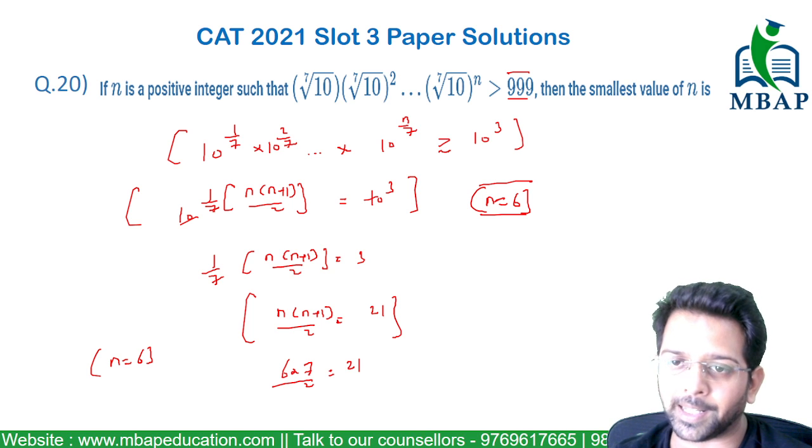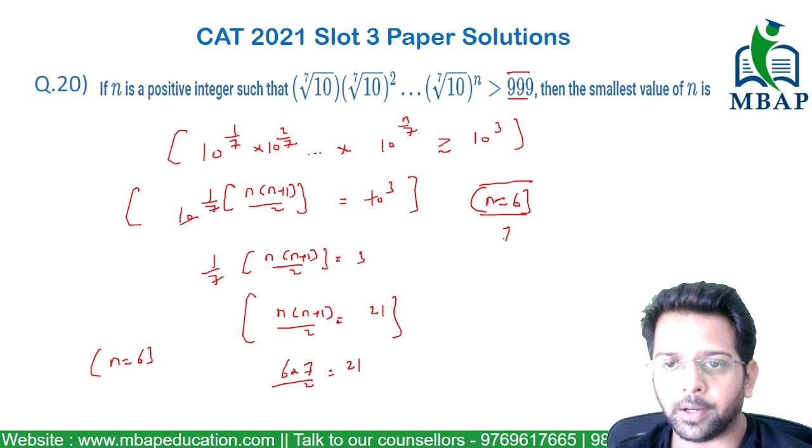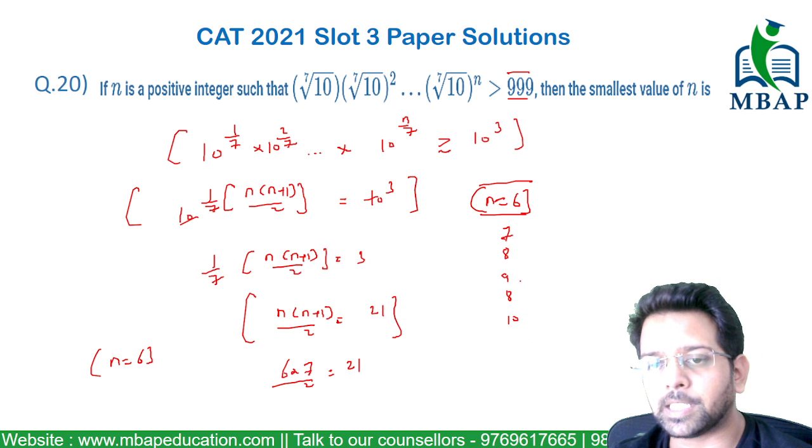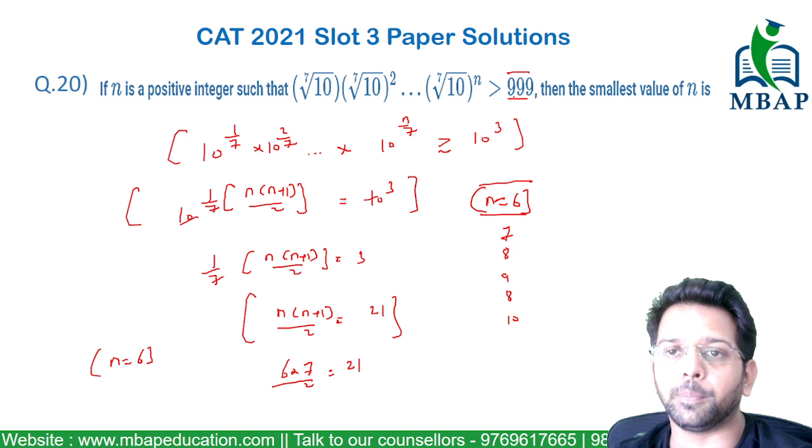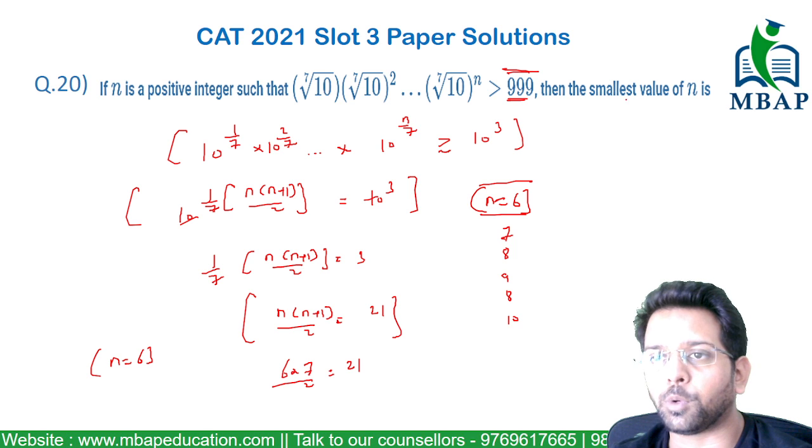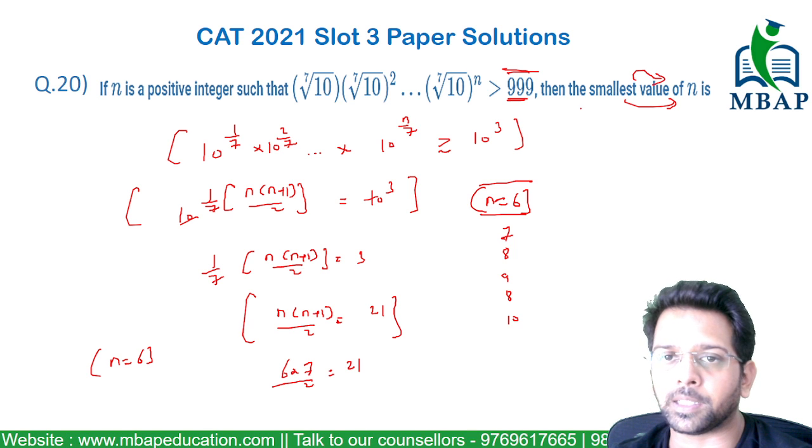We have assumed a value which is slightly more than 999, that is 1000. Whereas all the values like 7, 8, 9, 10, 11, any such values will definitely be more than 999 and hence the smallest value of n to be considered will be 6.